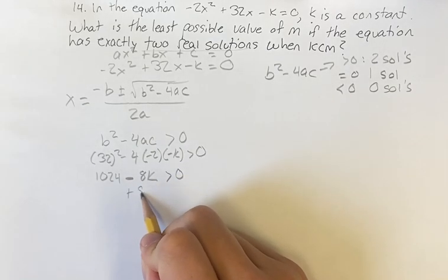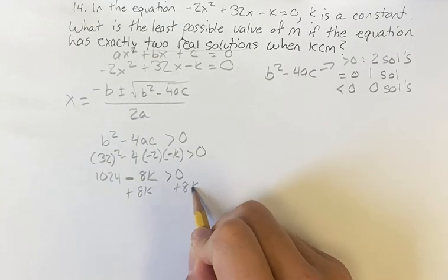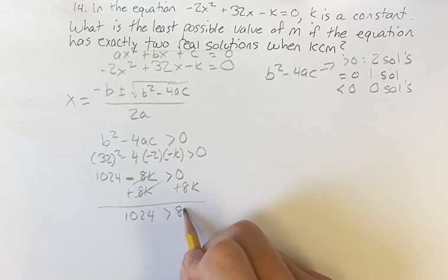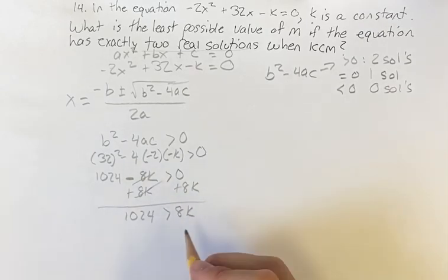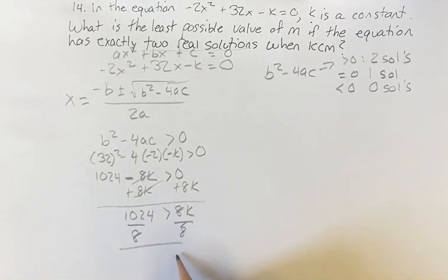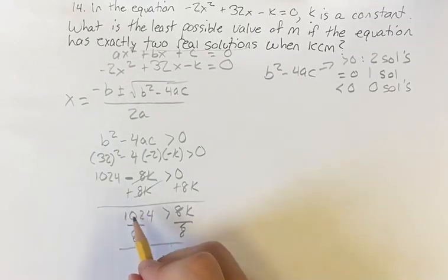So if we add 8k to both sides, we're left with 1024 on this side is greater than 8k. Getting k on its own, just divide by 8, and this is going to leave us with k on this side with the 8s disappearing, is less than 1024 divided by 8, which is 128.